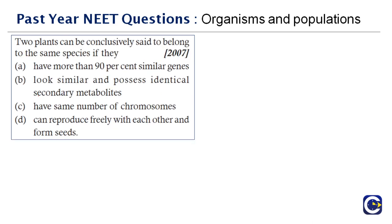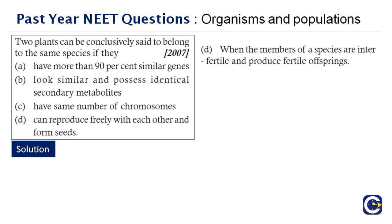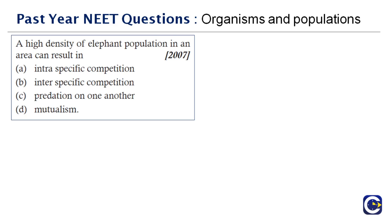Next question: two plants can conclusively be said to belong to the same species if they — have more than 90% similar genes (wrong), look similar (wrong), possess identical secondary metabolites (wrong). The correct answer is that they can reproduce freely with each other and form seeds. That is the main criterion required, so the right answer is option C.